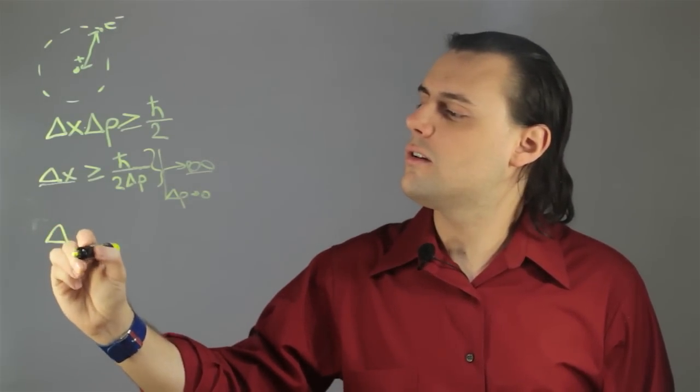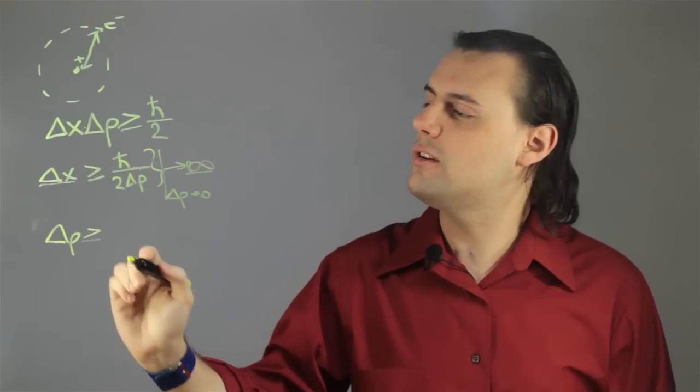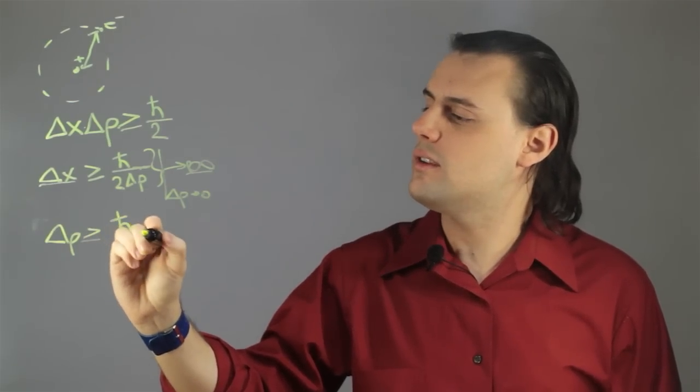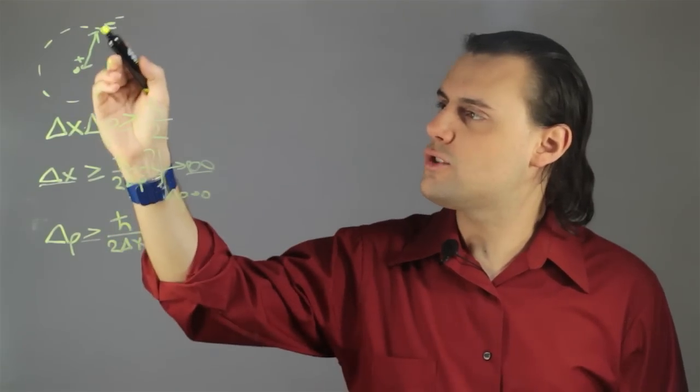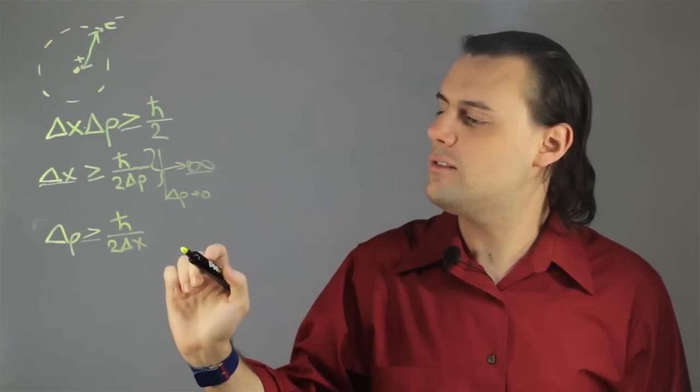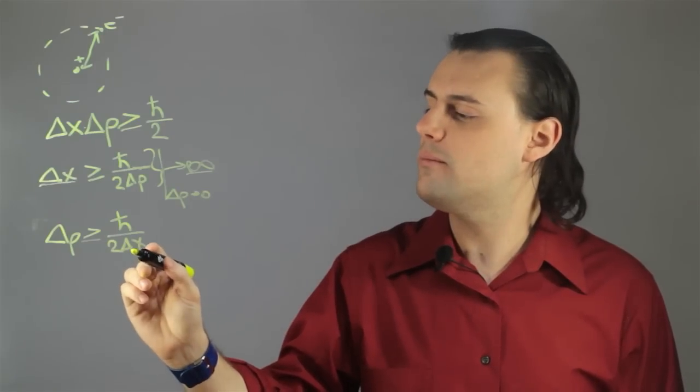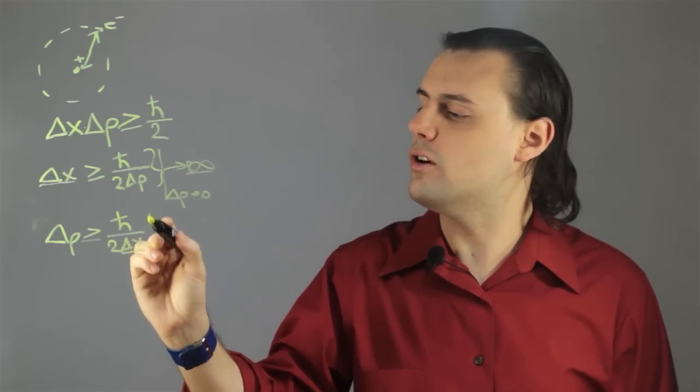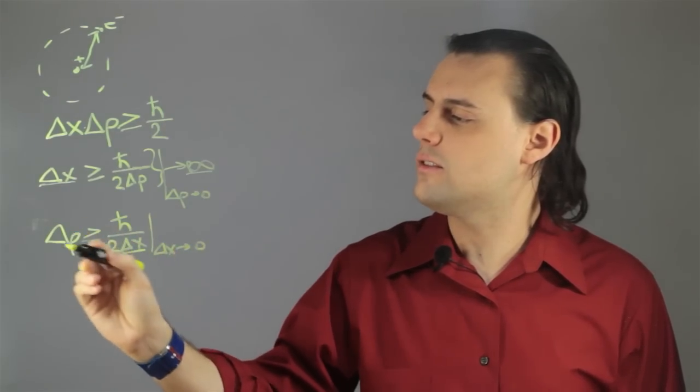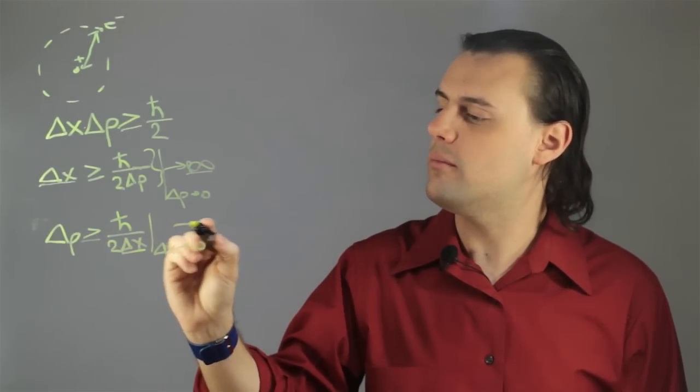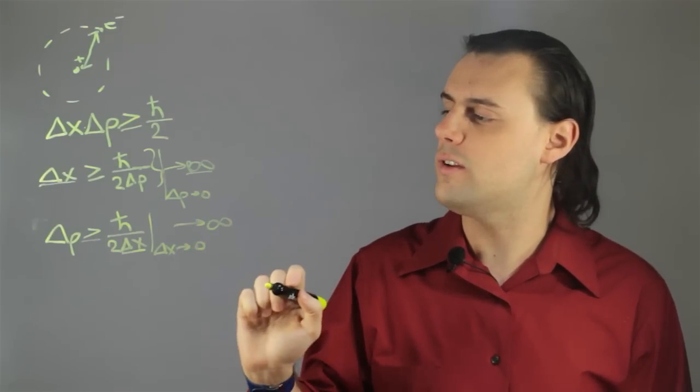In other words, or from a different perspective, if we examine the uncertainty in the momentum, we see the exact same thing going on. As the electron collapses to the nucleus, where it would classically remain at rest, this uncertainty would go to zero. Which means that the uncertainty in the momentum would also diverge and explode, go to infinity.